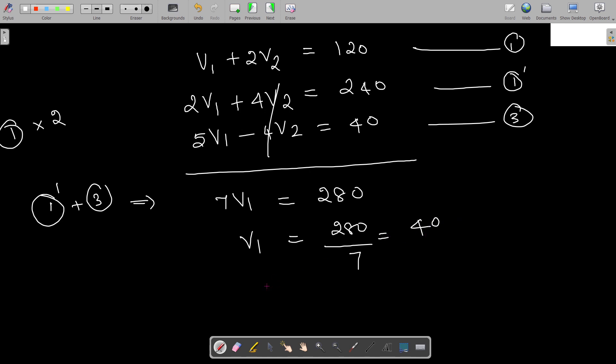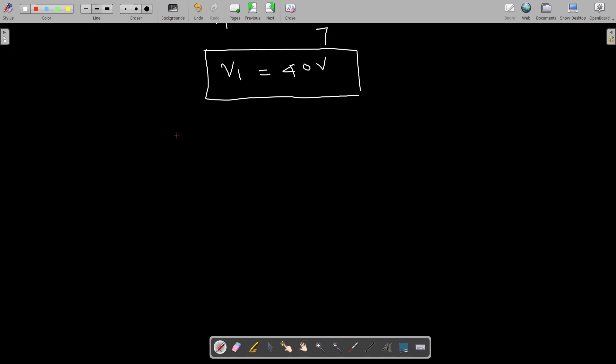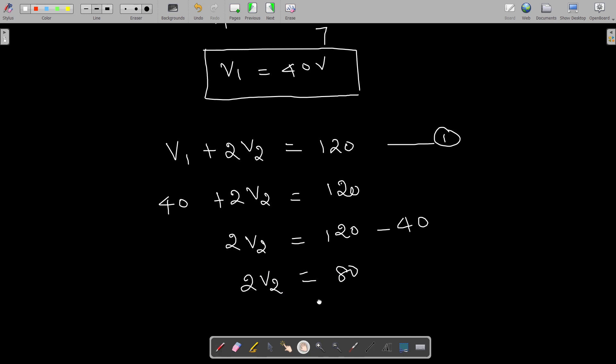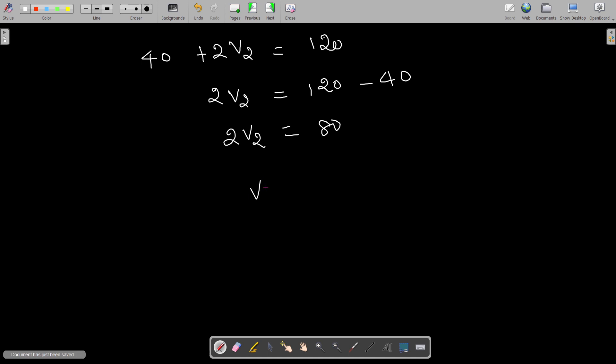Then I take once again equation number one. In this I substitute v1 as 40: 2v2 = 120 - 40 = 80, so v2 = 40. v2 is equal to 40 volts. So we get both the answers: v1 and v2 are 40 volts. This is our answer.